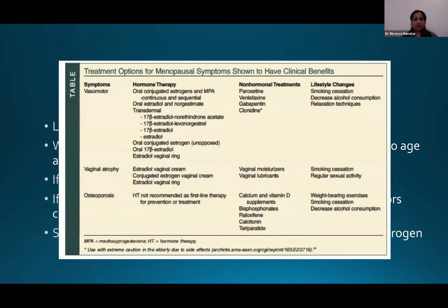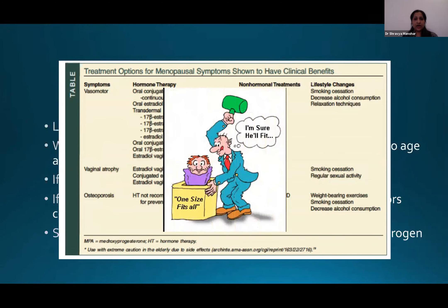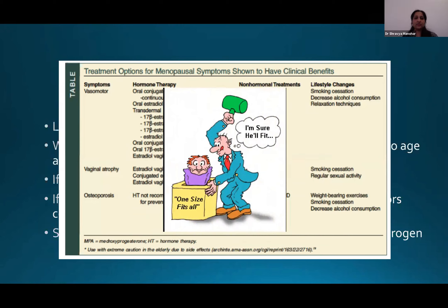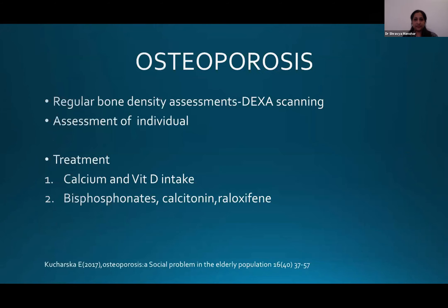There is a tabular overview of possible methods of treatment. It is not a one-size-fits-all approach — treatment must be individualized and tailor-made for each patient. For osteoporosis, regular DEXA scanning is of utmost importance, and it can be treated through diet, calcium and vitamin D, bisphosphonates, calcitonin, and raloxifene.